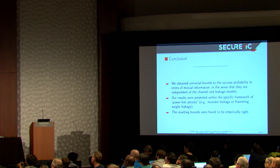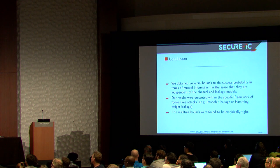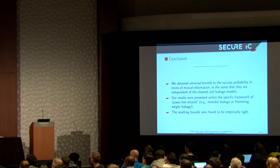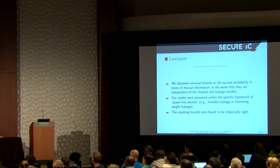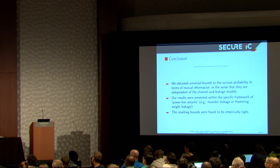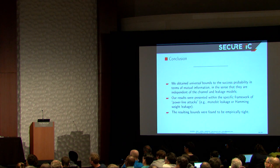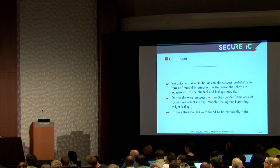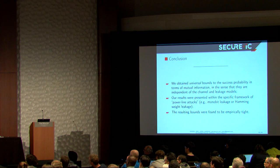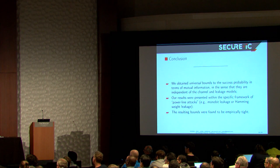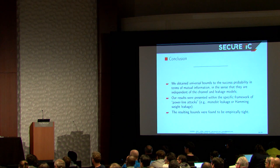So time for me now to conclude. We obtained some universal bounds on the number of traces. Universal meaning that we only reason about mutual information, and there is no specific model for how our information leaks. We illustrated them in the framework of power line attacks, but it could extend also to timing leakage, for instance. And so the results were found to be fairly tight. So thank you for your attention, and now I welcome some questions. And during the questions, I do some announcements for you, just to read them.